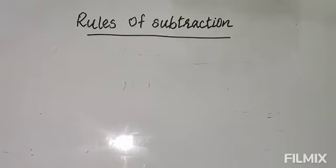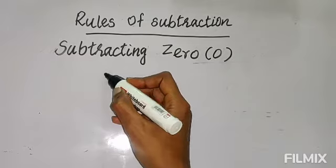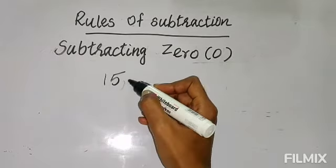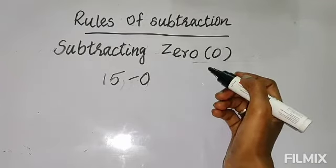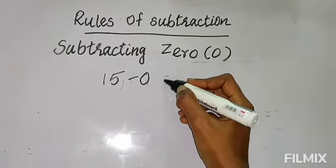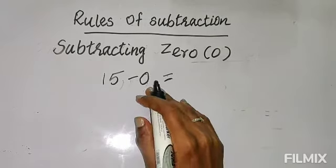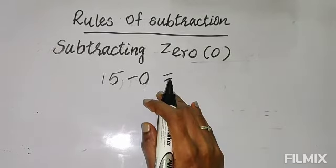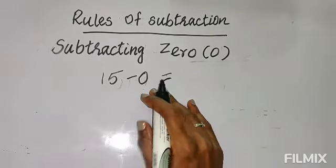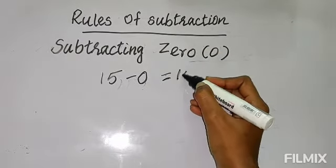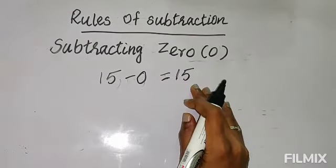The first rule is subtracting 0. Let's take an example. Suppose you have the number 15. From 15 if you minus 0 — 0 means nothing. We cannot minus nothing from any quantity, any number. Suppose you have 15 pencils and your sister has nothing — you cannot minus. So when you minus 0 from any number, you will get the number itself.